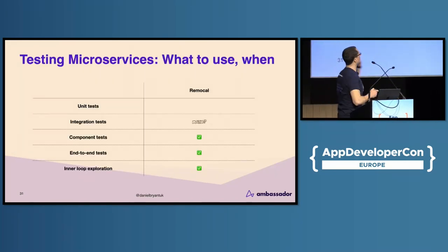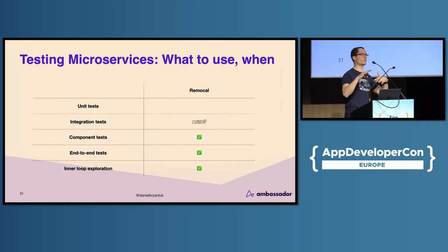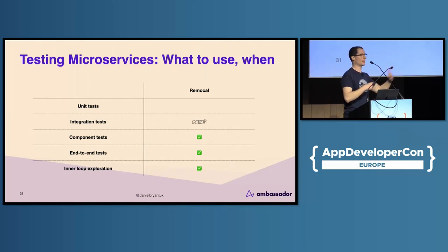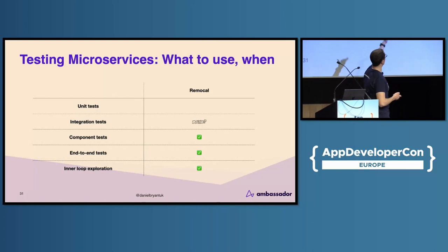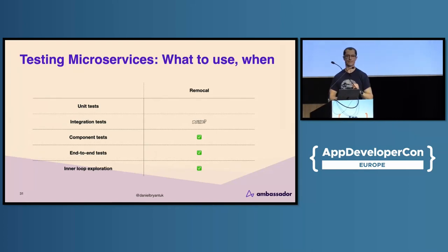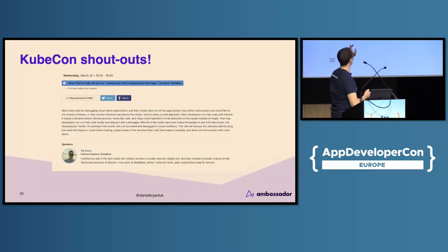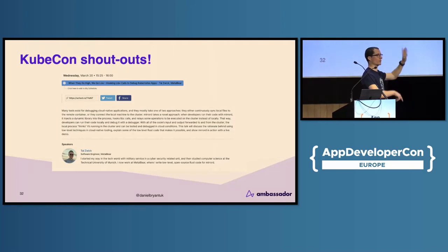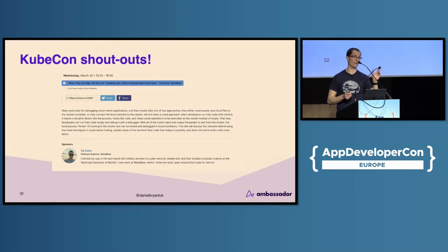What to use when for Remocal: unit tests, no — unless you've got a special use case like massive data engineering or machine learning. You don't want to be running Remocal tools bridging into a cluster with crazy high latency. For integration testing and beyond, it's really a good use case. I'll also give a shout-out to the MirrorD folks — MetalBear — they're doing a great-looking talk tomorrow that goes into more of the mechanics behind the scenes, which sounds fascinating.